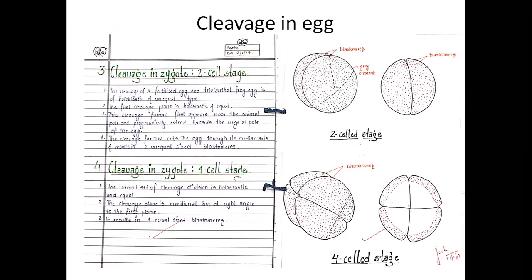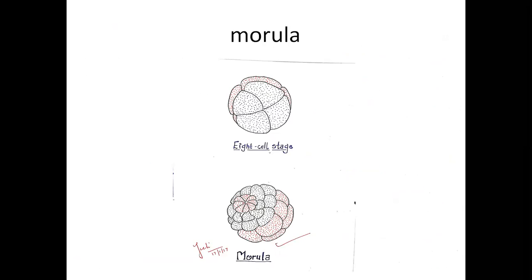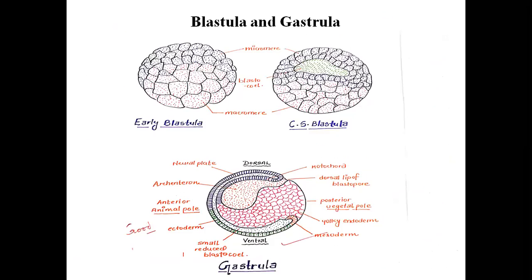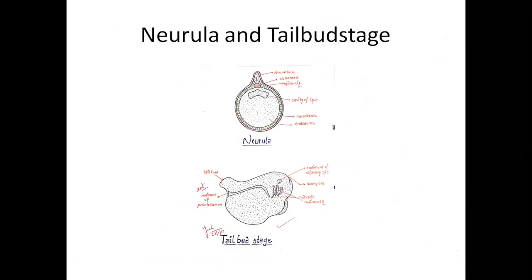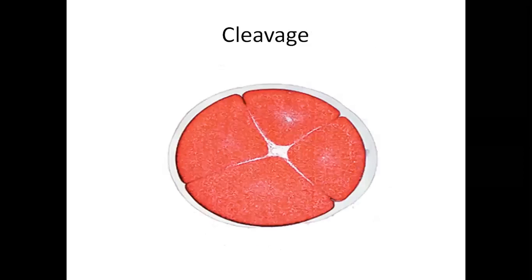File mein cleavage, morula, blastula, gastrula, neurula, tailbud stage ke diagrams hain. This is neurula and this is tailbud stage. This is an example of a file in which you can see the diagrams and the content. Now the first diagram you can see - this is cleavage.